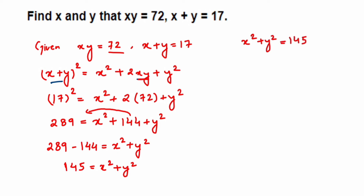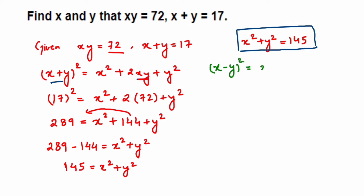We got x² + y² = 145, but we still need the individual values of x and y. So now I'll use a second identity. I'll use (x − y)², not (x + y)² again, because substituting back would give the same result. The second identity is (x − y)² = x² − 2xy + y².